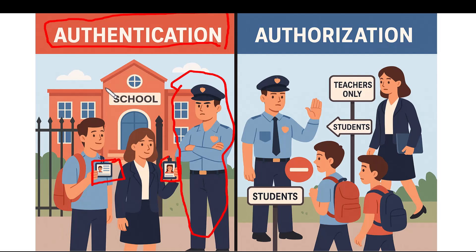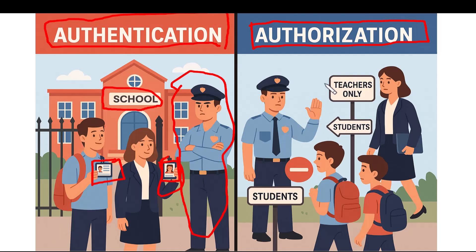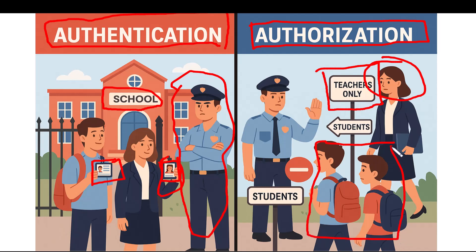Authentication indicates that you are the one who you are claiming to be — in our case, a student or teacher of this school. Now for authorization: imagine you are a student who has entered the school using your ID card. Inside the school, you are allowed to visit some areas but not others. For example, some places are specifically for teachers only — teachers are allowed to enter that area, but students are not.